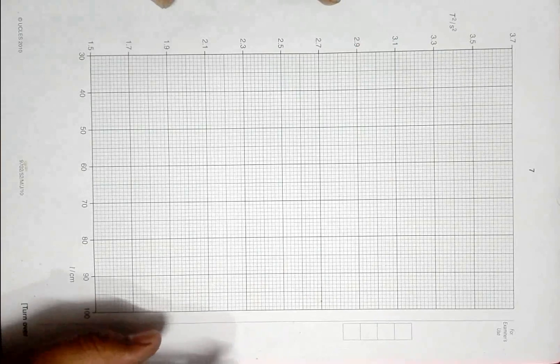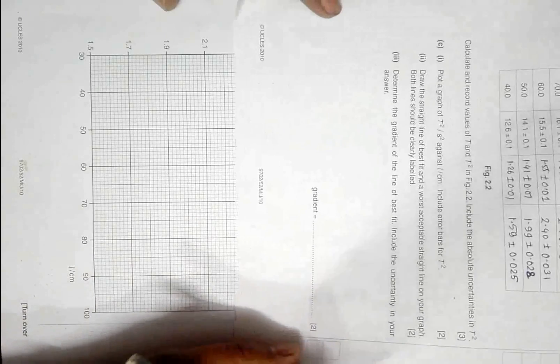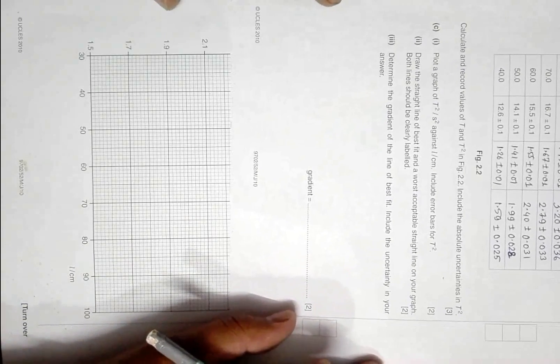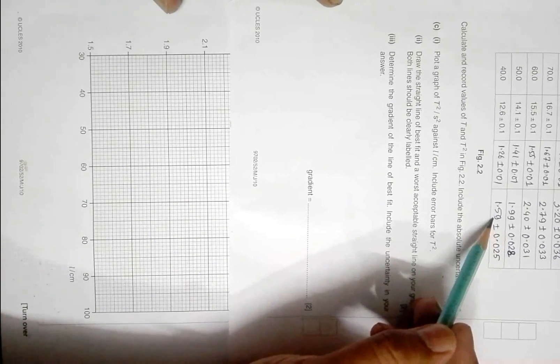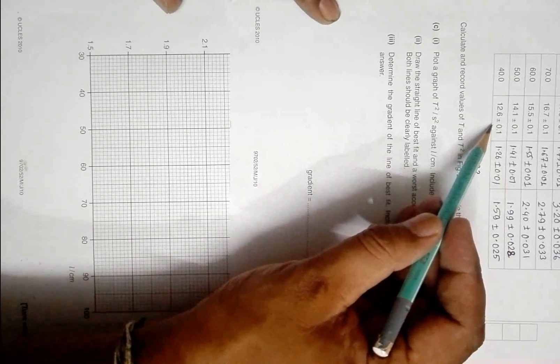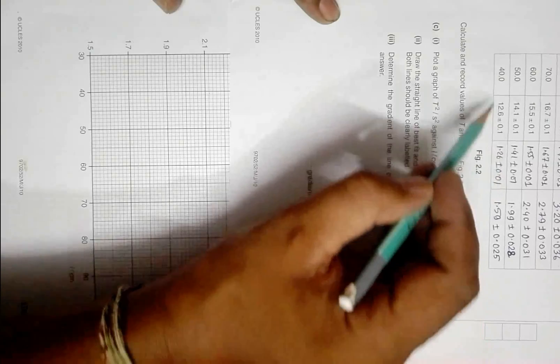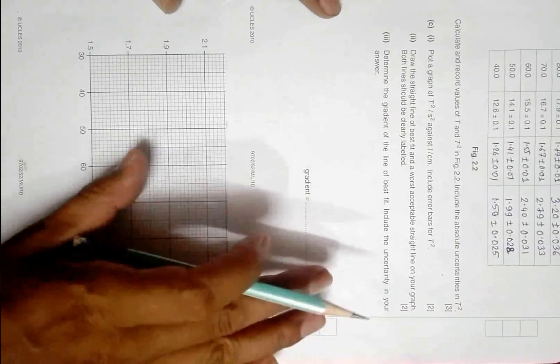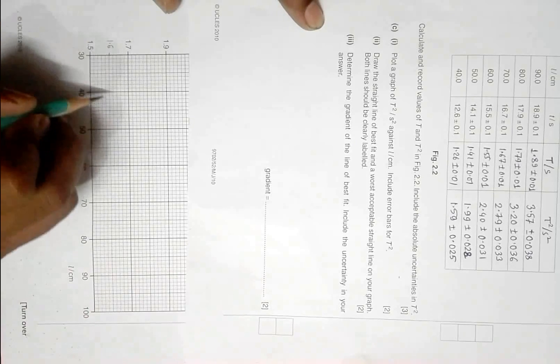The first point that we have, let's go for the last one actually because it's the smaller one. Here we have T square 1.59 seconds squared and we have 40.0. So at 40 centimeters, 40 centimeters, our data is 1.59.